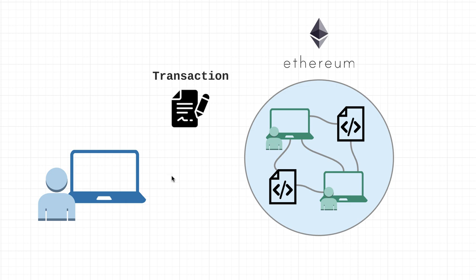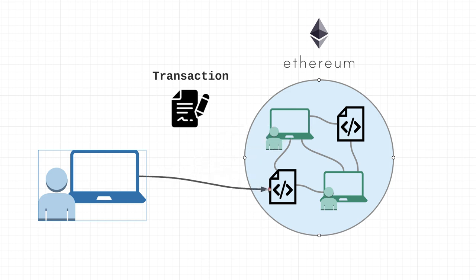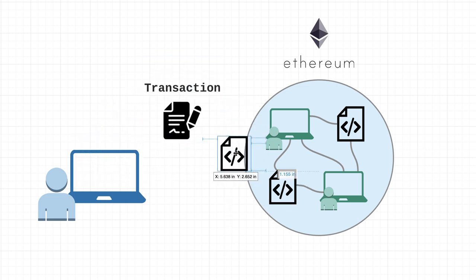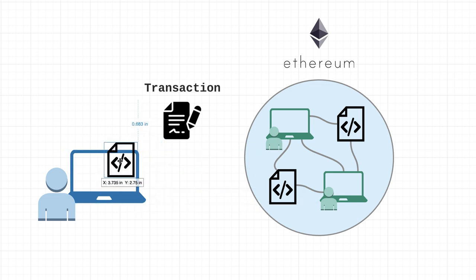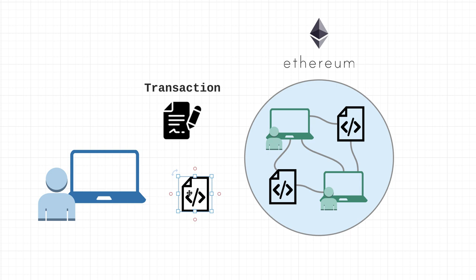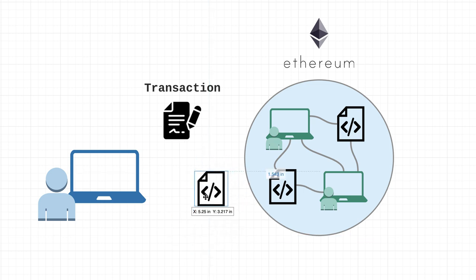In addition to transactions where the recipient is an EOA or an existing smart contract, there is one other important type: a transaction for deploying brand new contracts to the network. As a developer, when you want to deploy a new smart contract, you create a transaction and set the recipient to the zero address — an address with all zeros. This is not an EOA or a contract address; it's a special address meaning 'deploy this contract for the very first time on the network.' That's called the zero address.